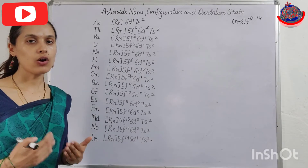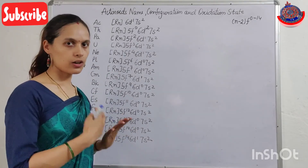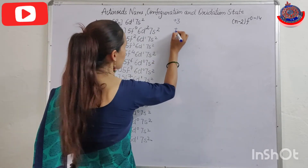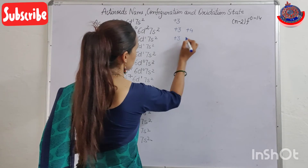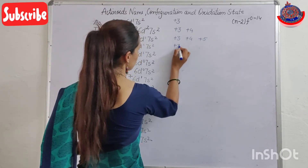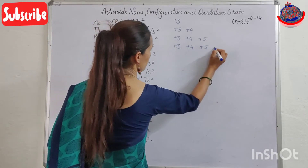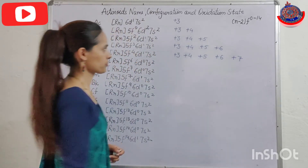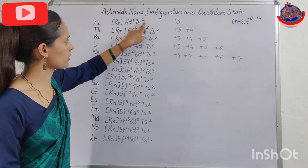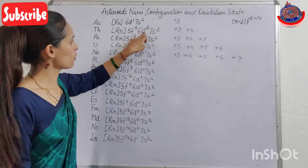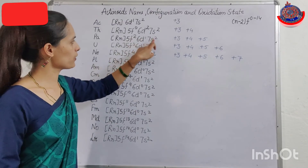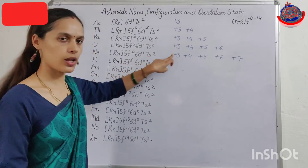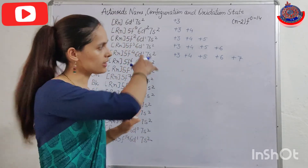Now here we will study the oxidation states of actinoids. Their general oxidation state is +3. The pattern builds up: start with +3, then +3 +4, then +3 +4 +5, then +3 +4 +5 +6, then +3 +4 +5 +6 +7 — increasing up to +7.